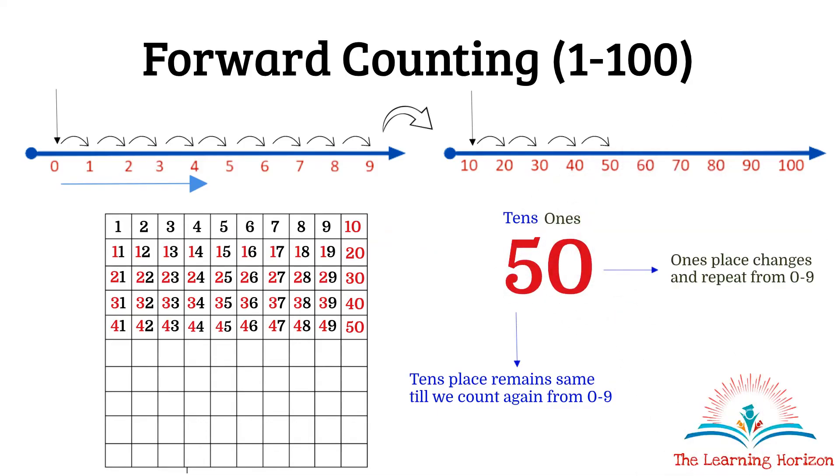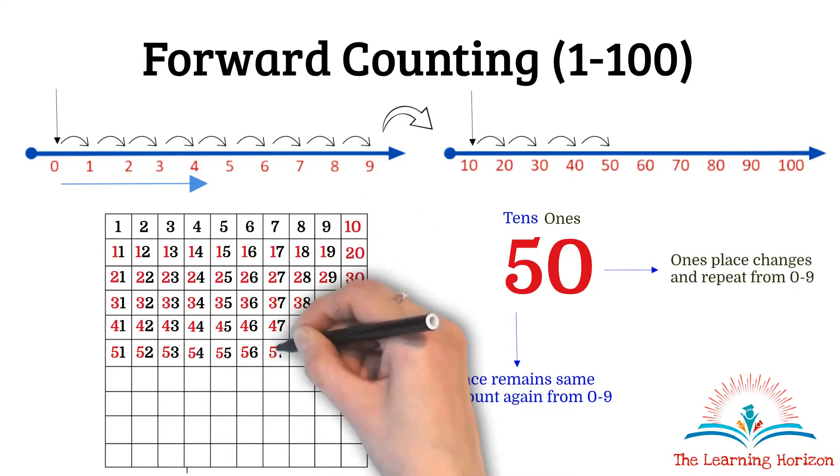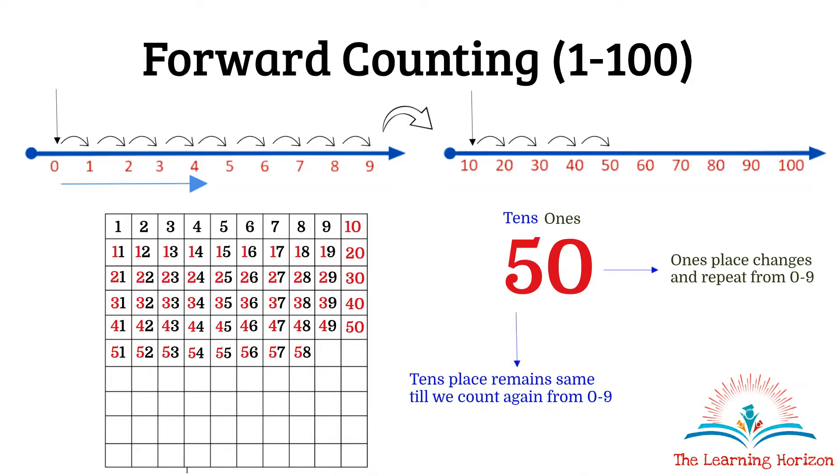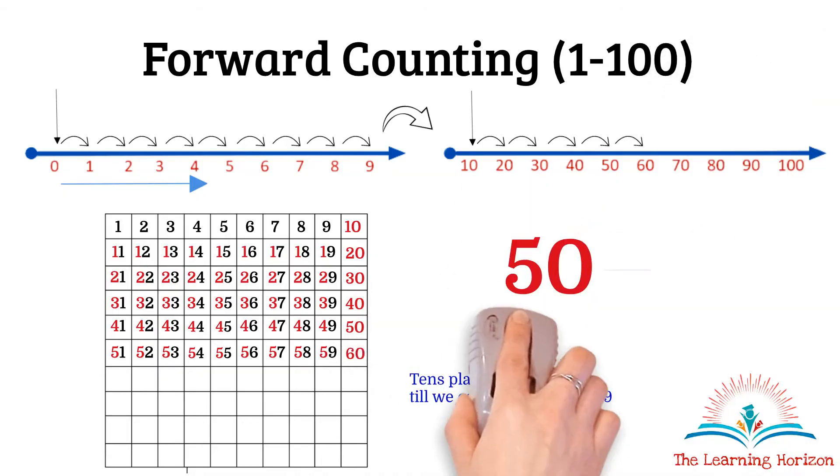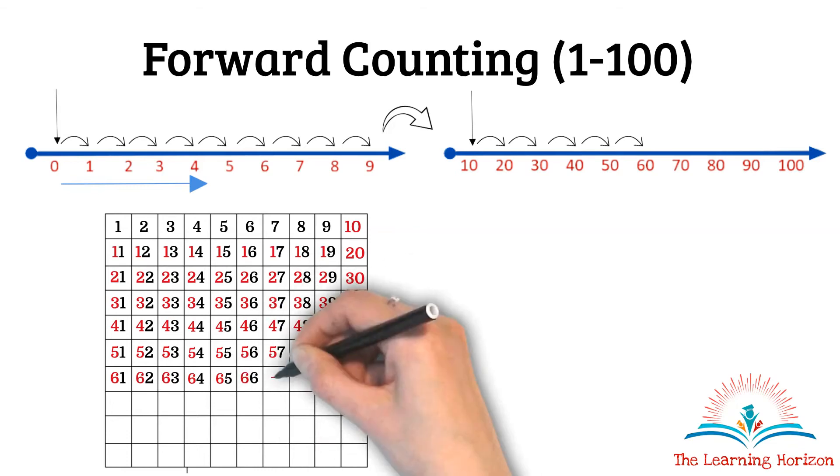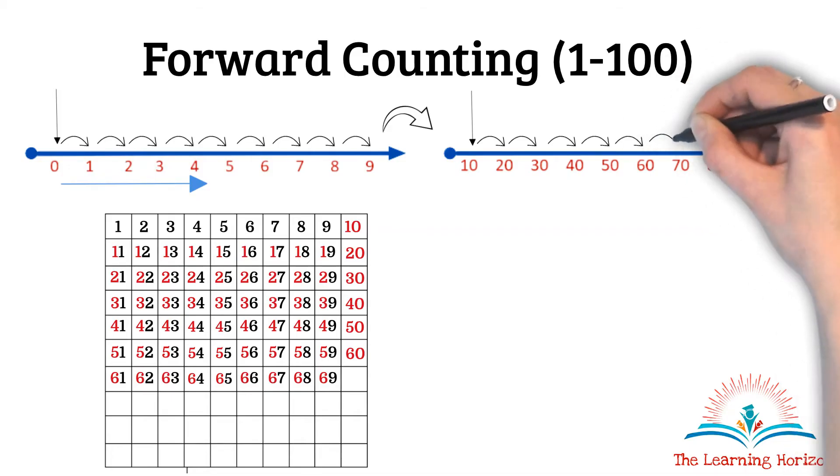51, 52, 53, 54, 55, 56, 57, 58, 59. Move on to 60. 61, 62, 63, 64, 65, 66, 67, 68, 69. Move on to 70.